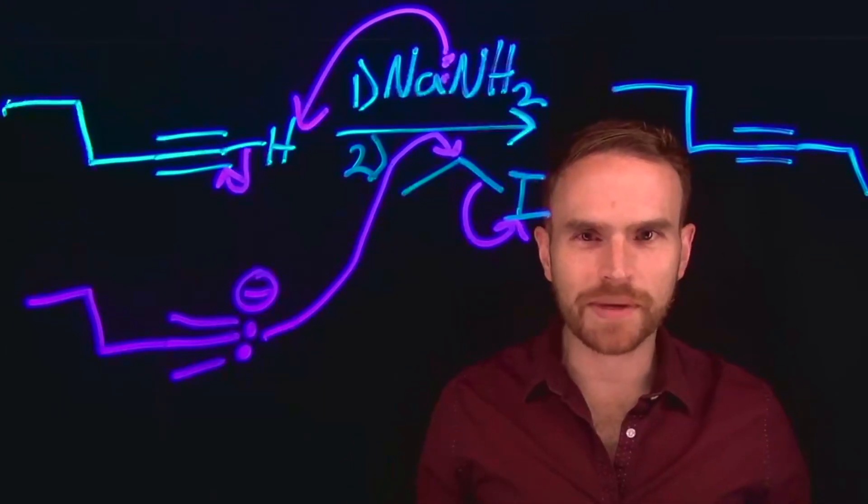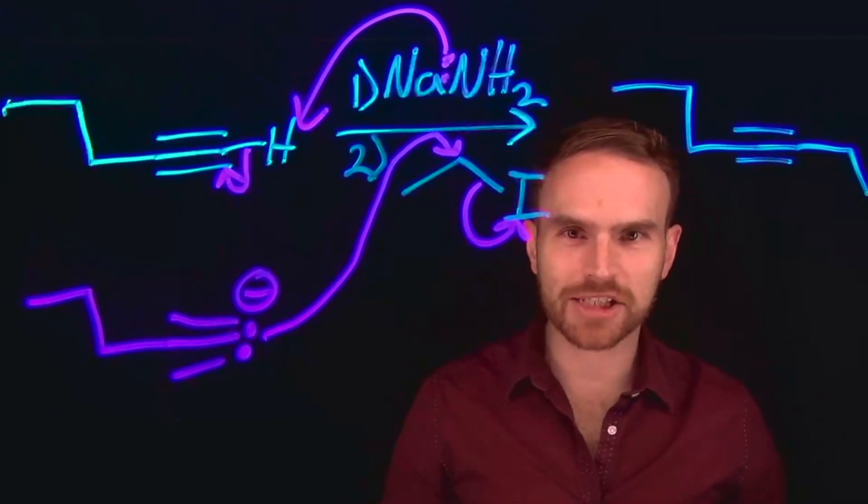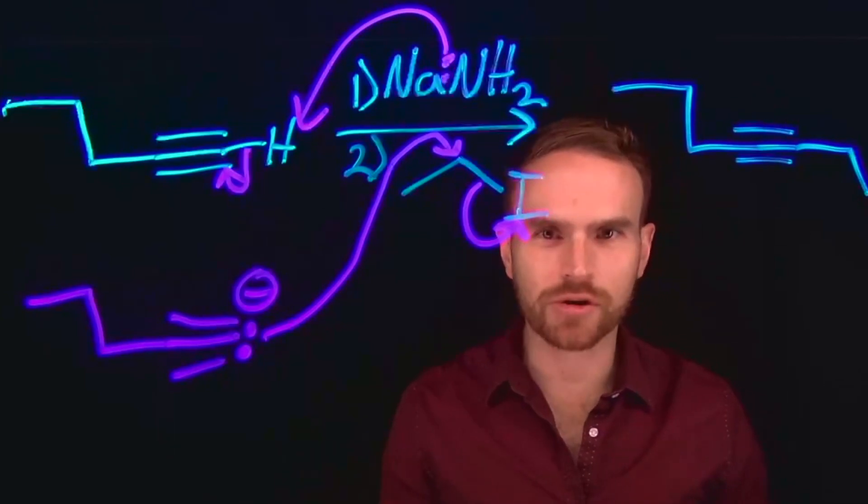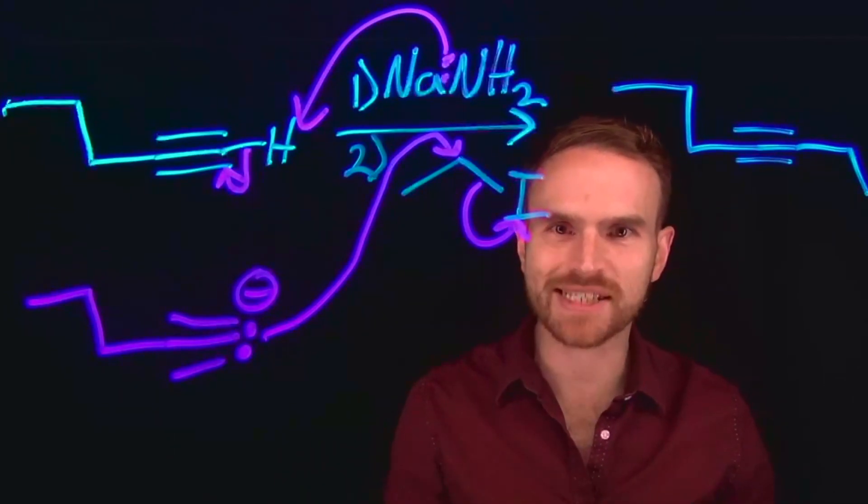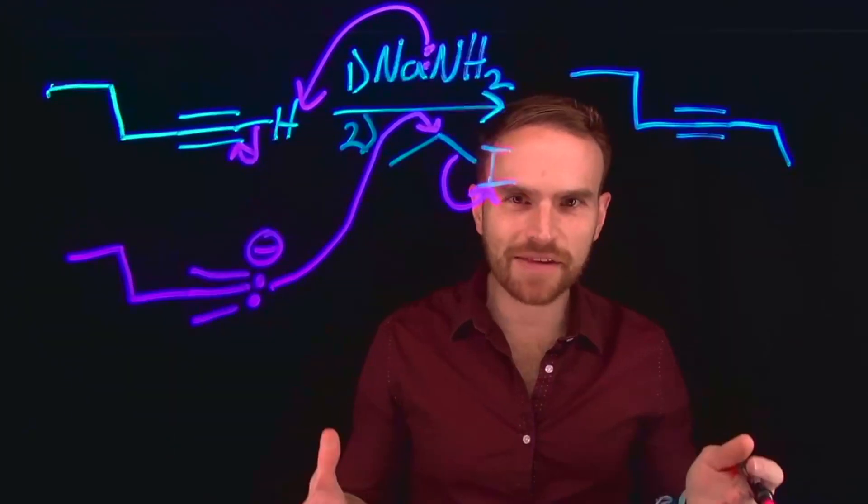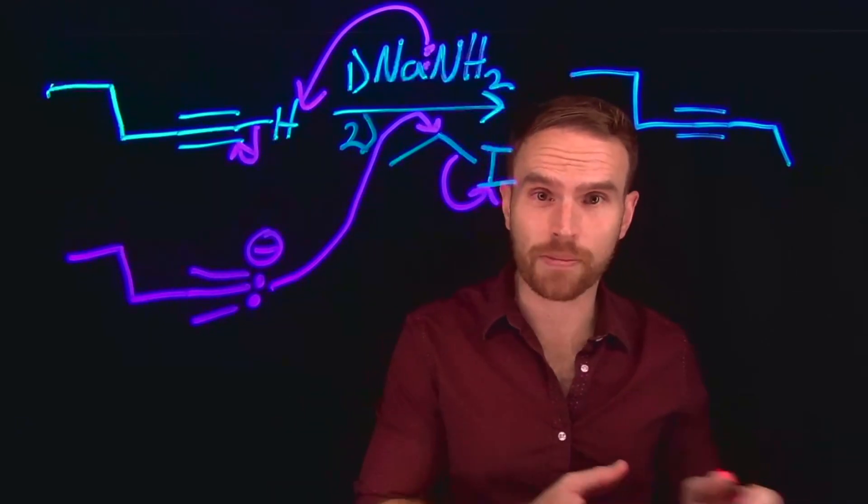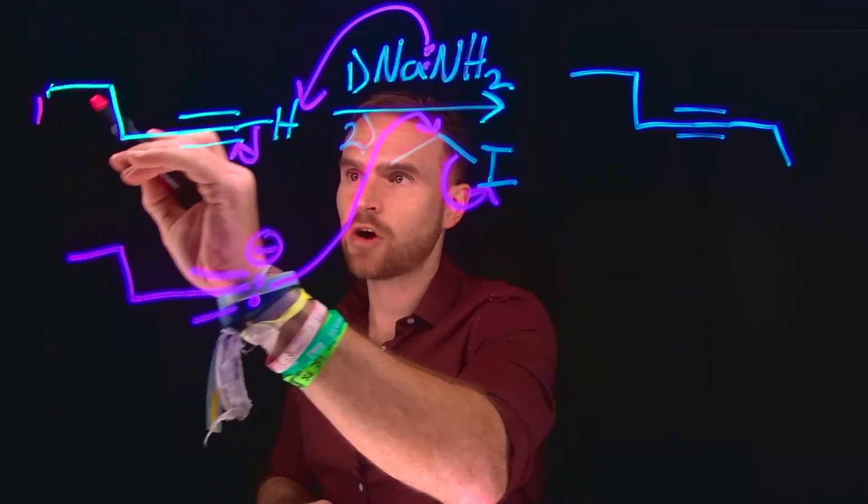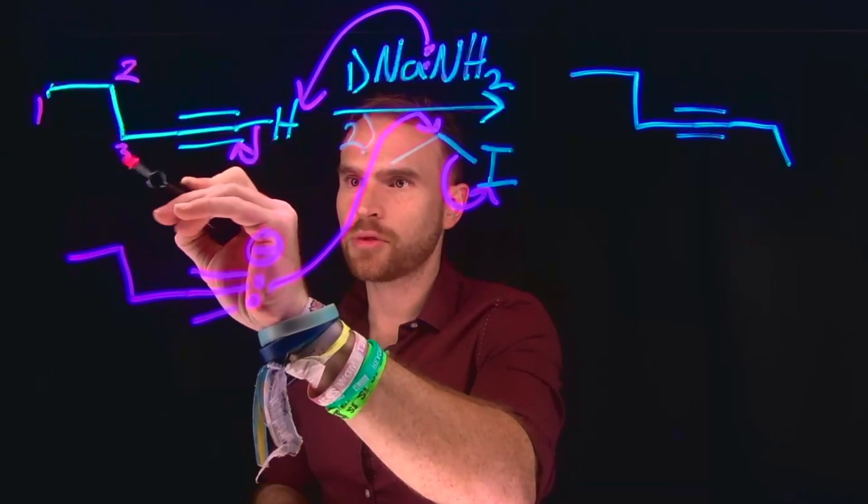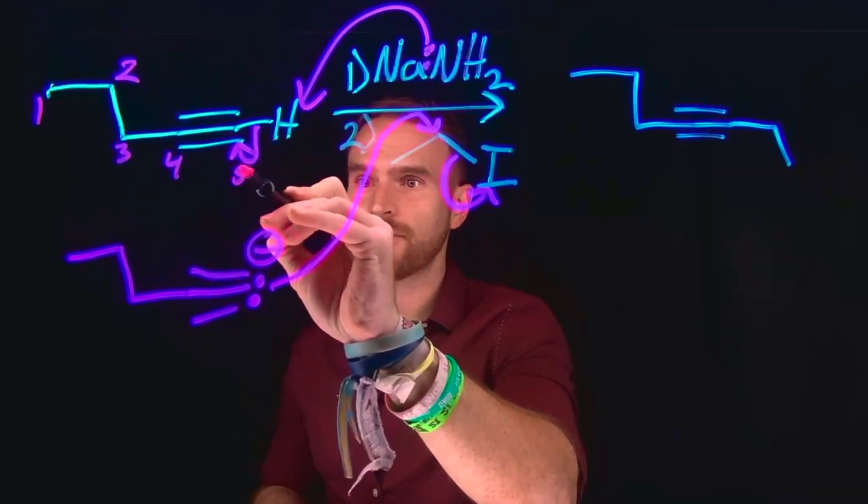And it will be important for you to be able to identify where this reaction is taking place so that you can start to use it in your overall multi-step synthesis reactions. And this gives us an opportunity to extend carbon chains. So notice that this carbon chain had 1, 2, 3, 4, 5 carbons,